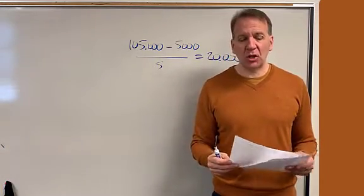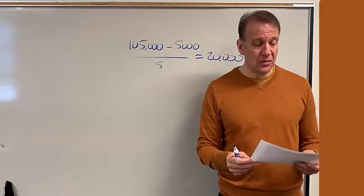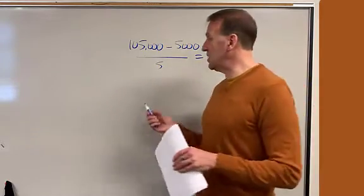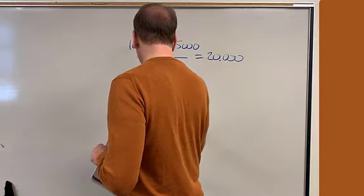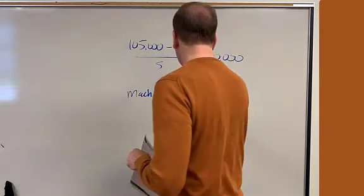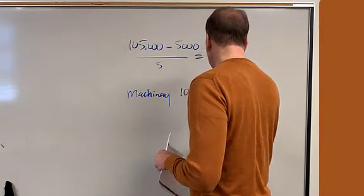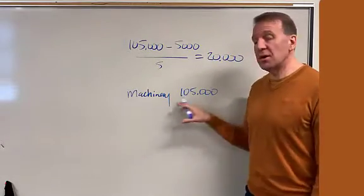Now let's take a look at this accumulated depreciation account. Accumulated depreciation. In the first year, our machinery is on our books for $105,000. That's what we purchased it for.